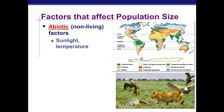Non-living factors include things like temperature, water, nutrients, and more unusual things like asteroids hitting the Earth or volcanoes. These are non-living factors that can make a population bigger or smaller.